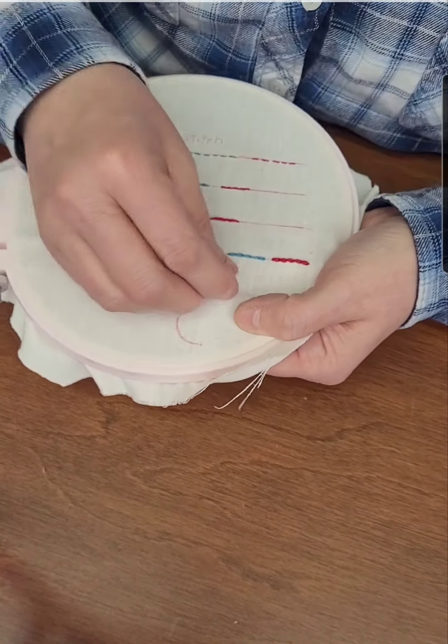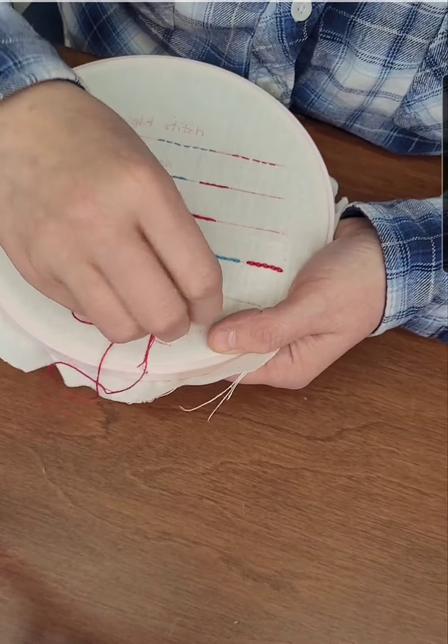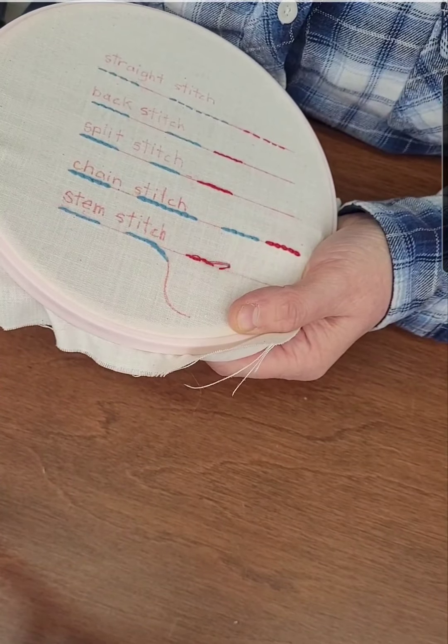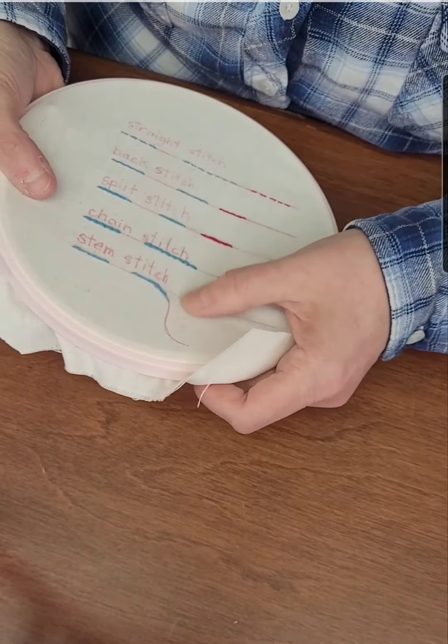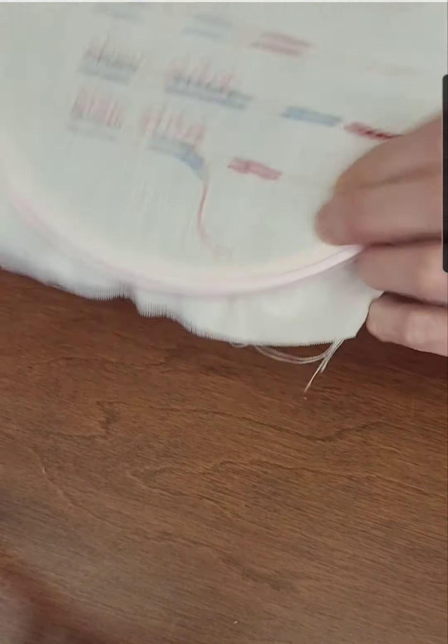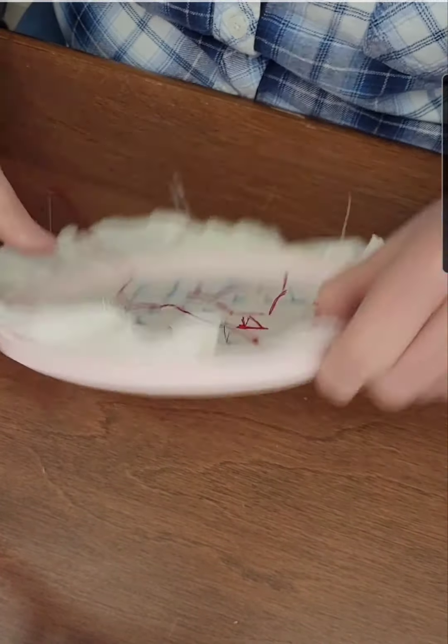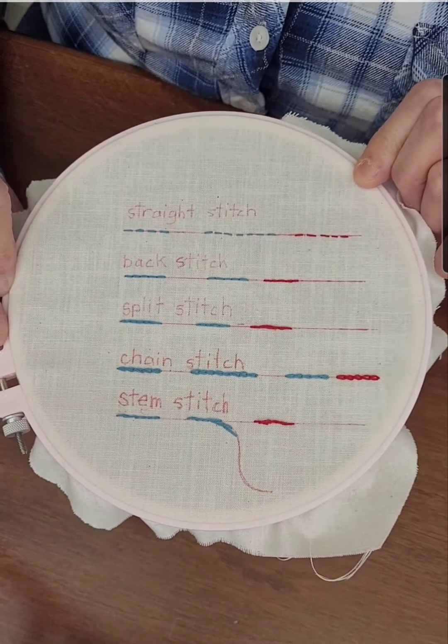So all of these stitches are considered outline stitches or border stitches, very versatile. So there you go and I'm just going to snip my threads. So I hope you enjoyed this video and you enjoy a little bit of embroidery.